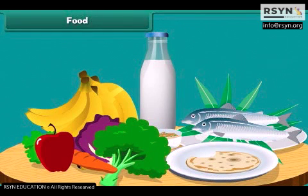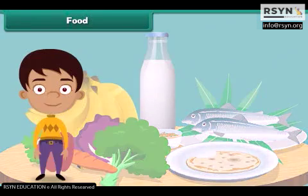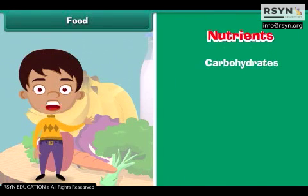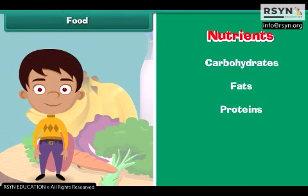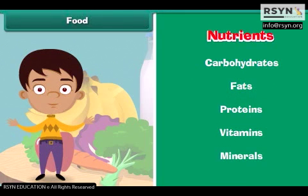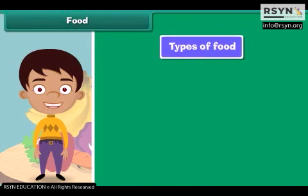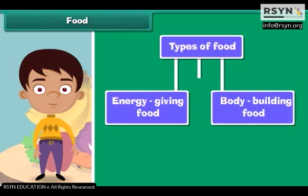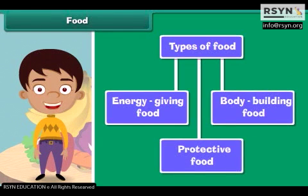We eat a lot of variety of food. Food is made up of nutrients like carbohydrates, fats, proteins, vitamins and minerals. The human body requires three types of food: energy giving food, body building food and protective food.